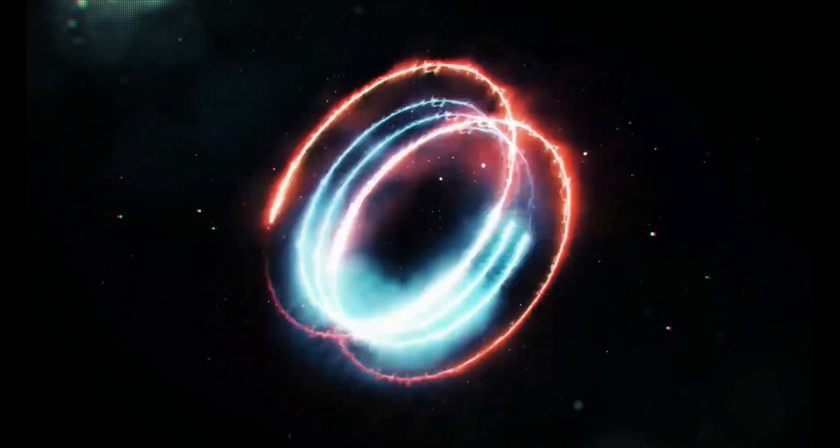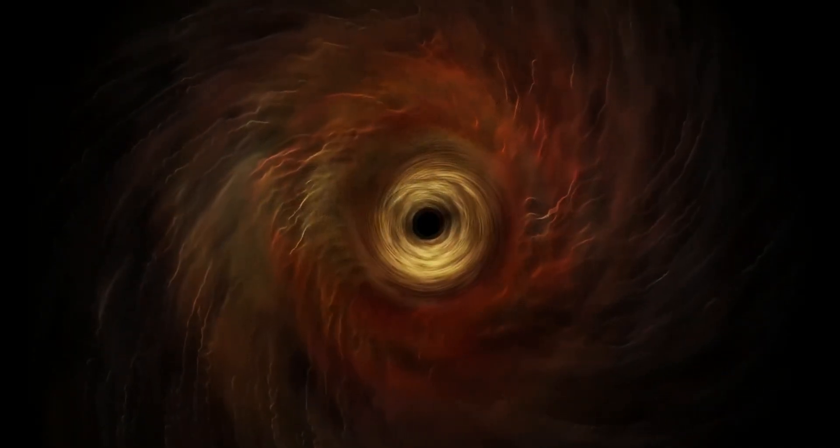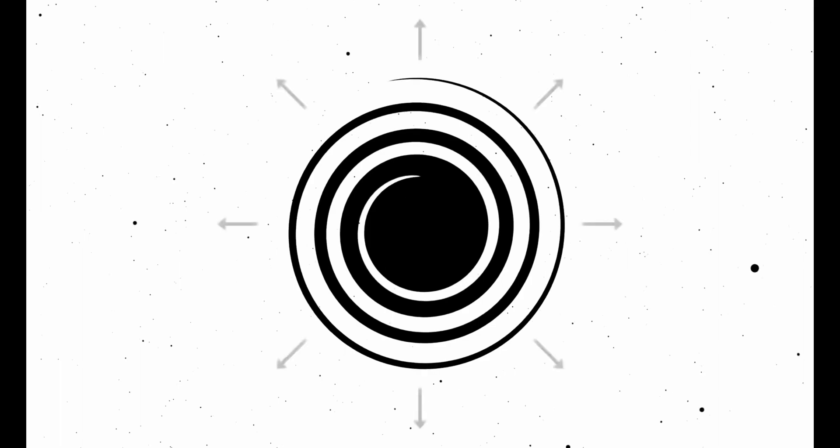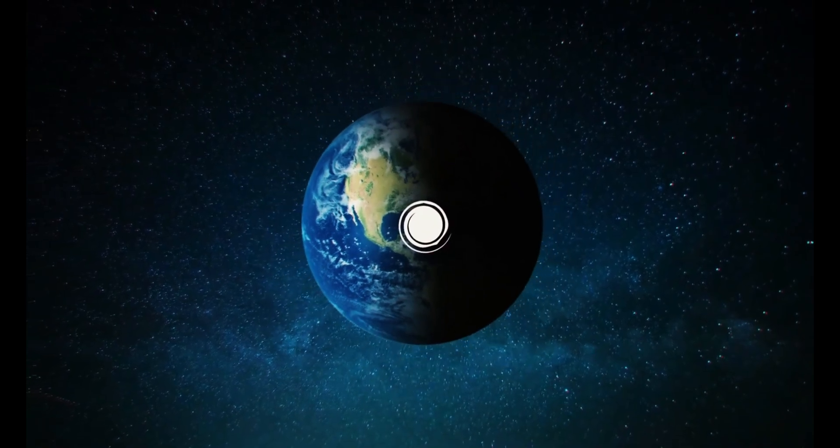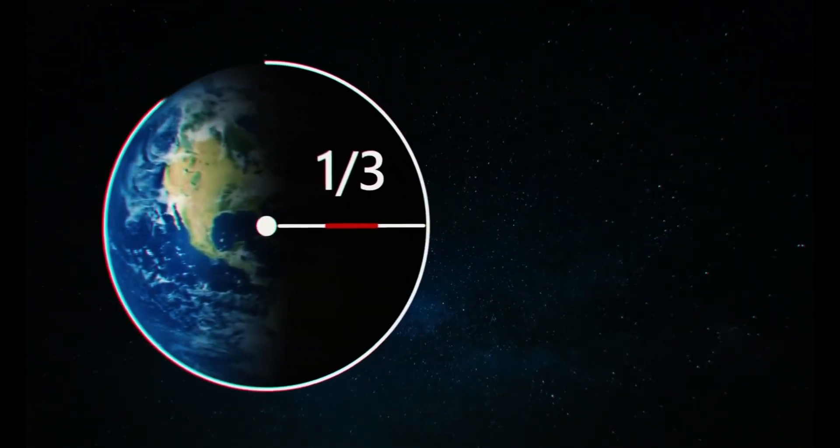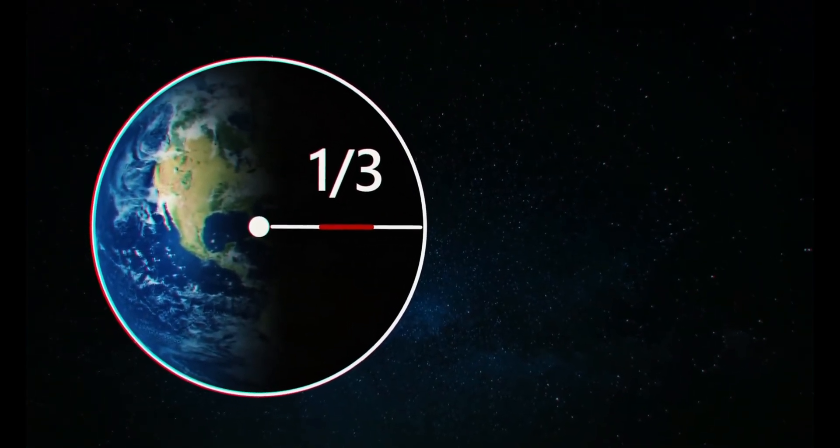Now, if we consider the scenario where we created a slightly larger black hole that we could see without any tools, things would change on Earth. Let's imagine a black hole with a diameter of just a millimeter placed on Earth's surface. It would affect about a third of the Earth's radius.